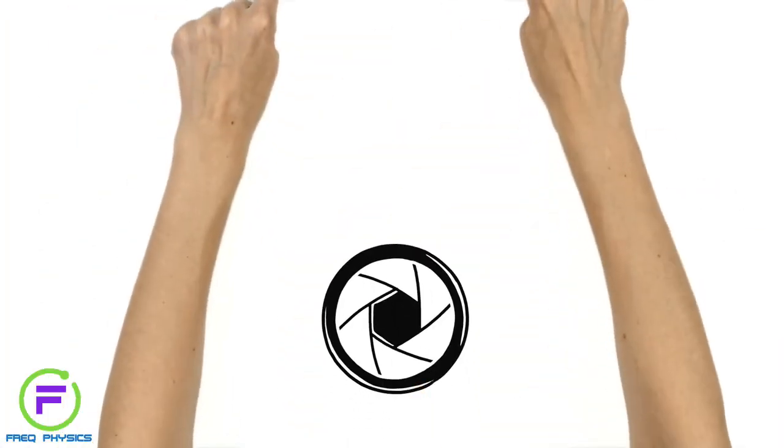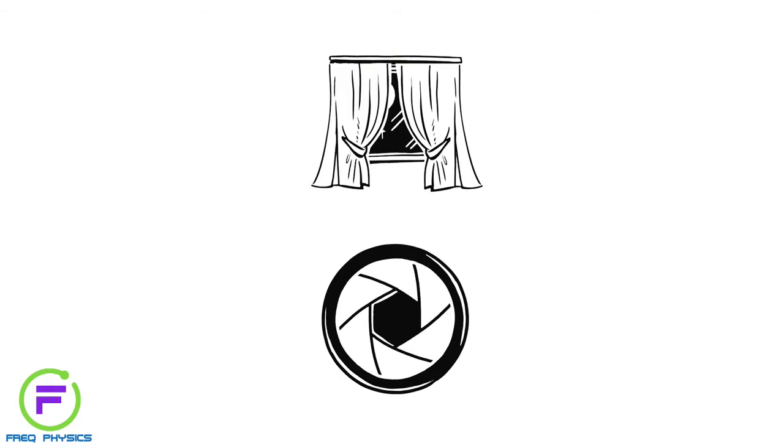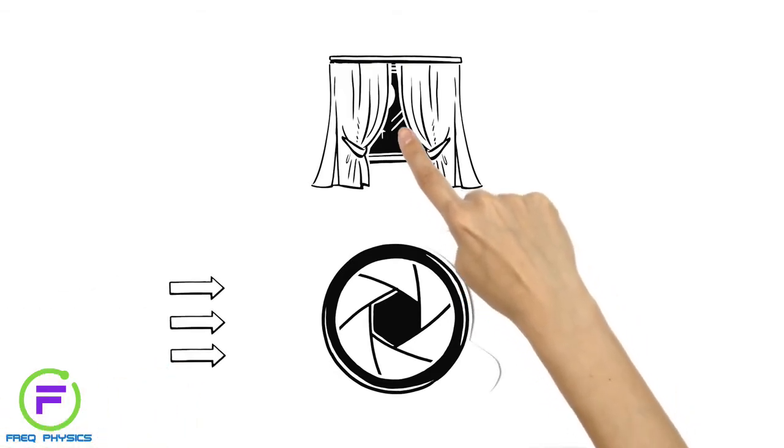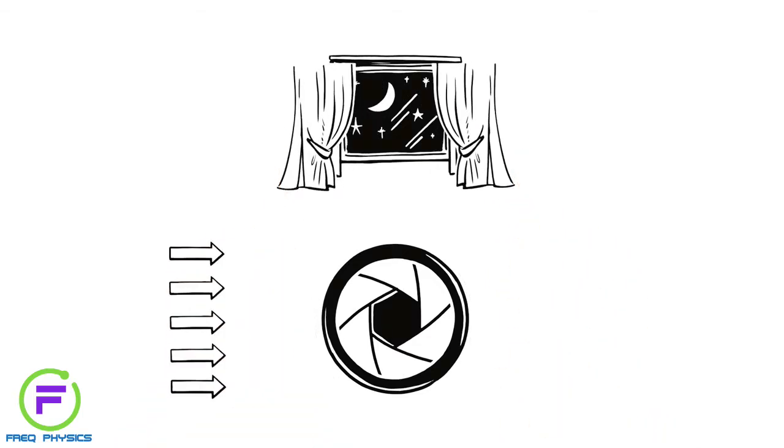Imagine the aperture as a pair of curtains. It controls the amount of light entering the lens. When it's dark, Mary wants to capture as much light as possible. To do that, she needs to open the aperture wider.